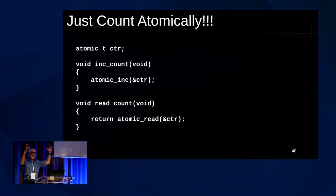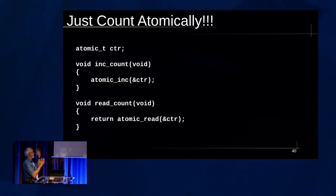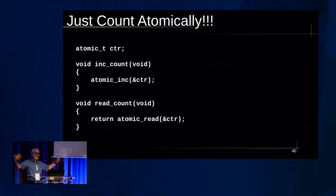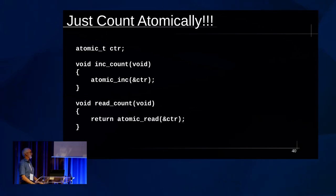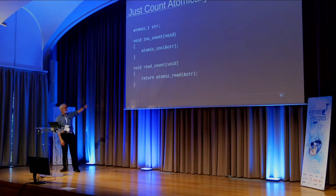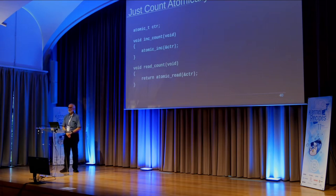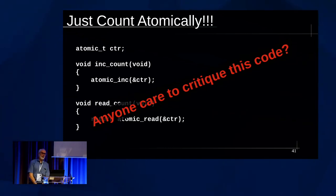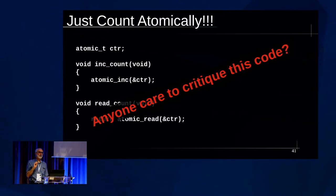So let's just count atomically — how hard can it be? If we're in the Linux kernel, we might do something like this: we have an atomic_t counter, which is a 32-bit atomic counter. To increment, we do atomic_inc, a function we call that takes the address of the counter. If we have a whole pile of people trying to increment at the same time, it all sorts it out and all the counts get applied. For the read count, we just do an atomic read of the counter, which picks up the current value. Would somebody like to critique this code? Serialized and slow.